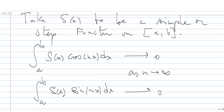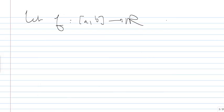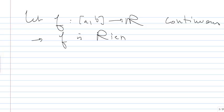Now, how do we go from a step function to a continuous function? This is the beauty. The fact that cosine and sine are bounded makes it very easy. Let f be a continuous function defined on [a, b]. We know that f is going to be Riemann integrable.